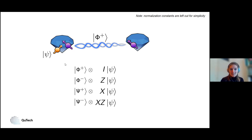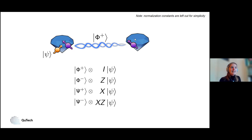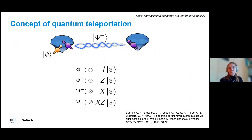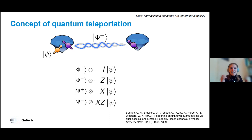What does this mean? It means that if we could measure the two qubits on the left side in a Bell basis, we project the qubits on the right into this arbitrary qubit state that we used to have on the left side, up to a certain rotation. And this is the concept of teleportation. I find this one of the most fascinating parts of quantum physics, because just from the notion of superposition, entanglement, and projective measurements, you can teleport a state from one side to the other.